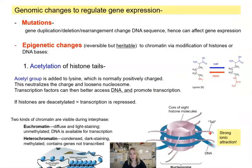Mutations can happen randomly. And if you have a change in the genetic code, you will have a change in gene expression as well. For example, if there is an enhancer that the gene is dependent on for expression, and that enhancer has a mutation, then the gene expression is going to be changed as well.